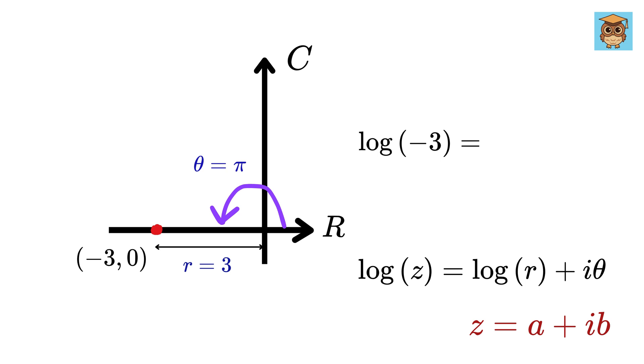So, log of negative 3 equals log of r, or log 3 plus i times theta, or i times pi. And that's it. Isn't this cool?